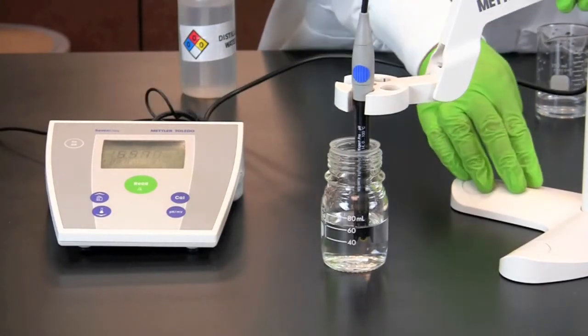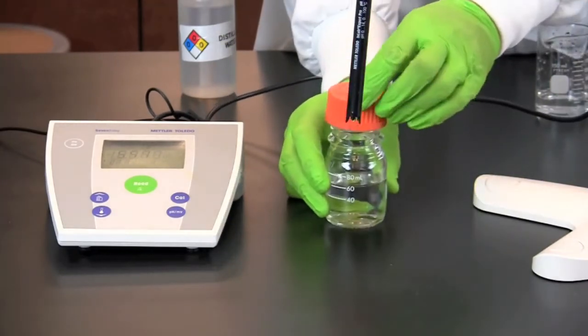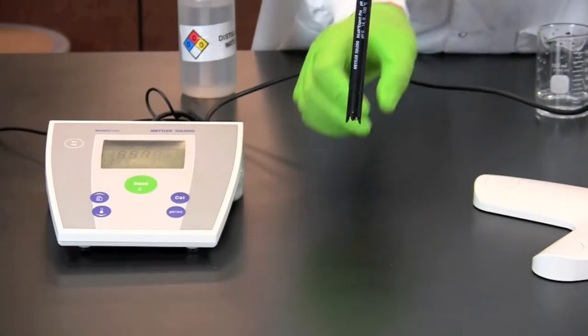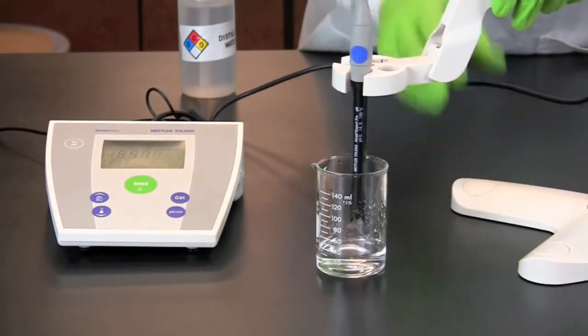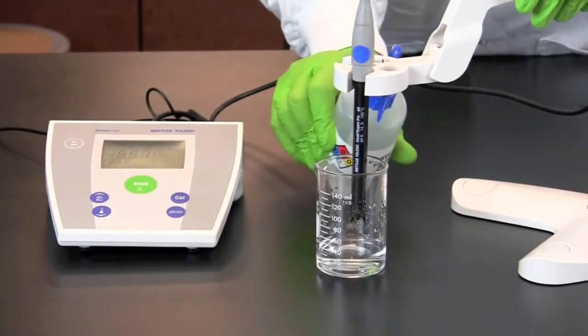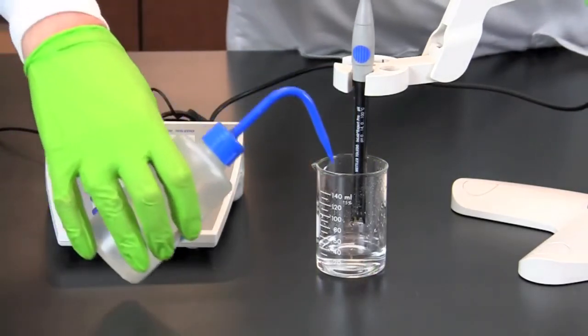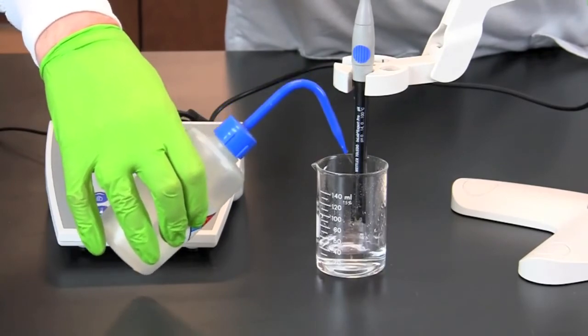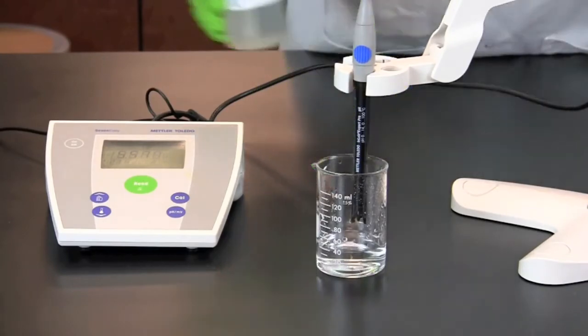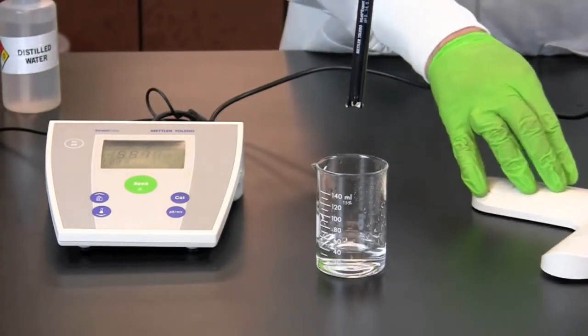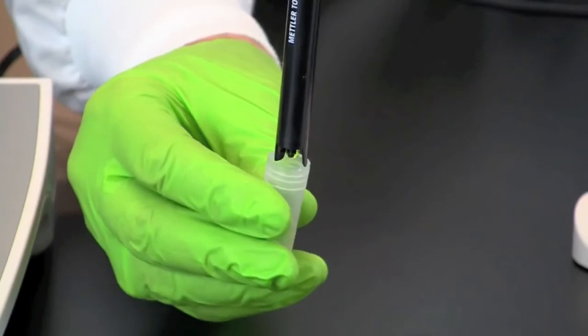Once the reading is complete, remove your sample. Once again rinse the electrode with distilled water. If this is your final sample, replace the protective electrode cap for storage.